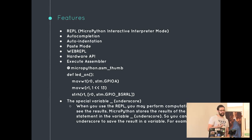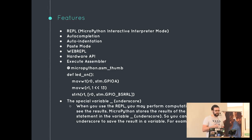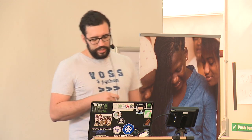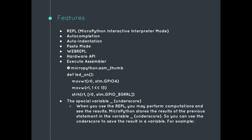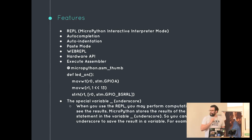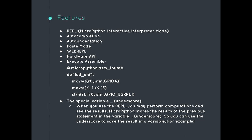It has autocompletion and auto-indentation, so for first-time Python users that helps if you're not sure what a class or function contains. It has a paste mode — instead of building and shipping as a firmware upload, you can just copy scripts you've written for quick prototyping. It also has a web interface, a hardware API, and you can actually do assembler on it if you want to interface directly with the hardware. There's also a special underscore variable: when working in the REPL, doing something like 15 plus 5 captures it in a temporary variable you can use afterwards.